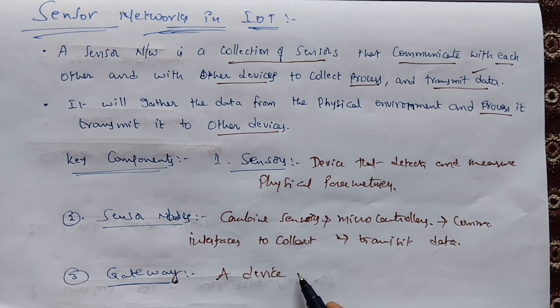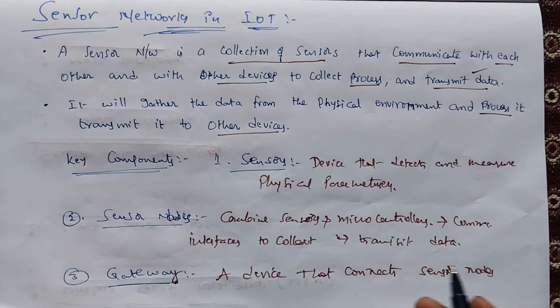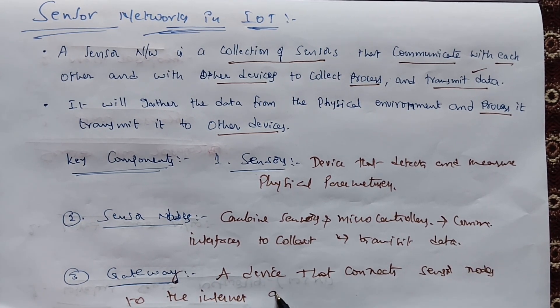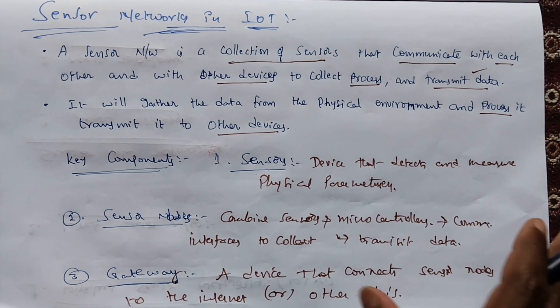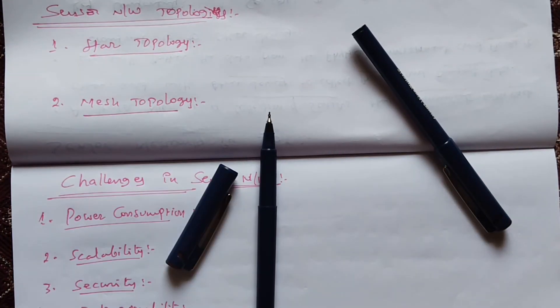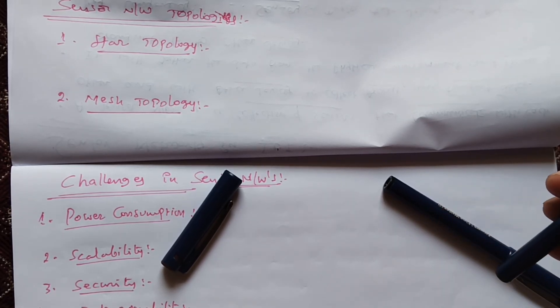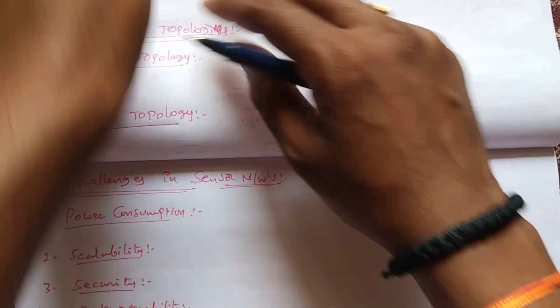The next key component is the gateway. A gateway is a device that connects sensor nodes to the internet or other networks. As we saw in the last class, a gateway is nothing but an entry point for a network. It checks incoming data as well as outgoing data.